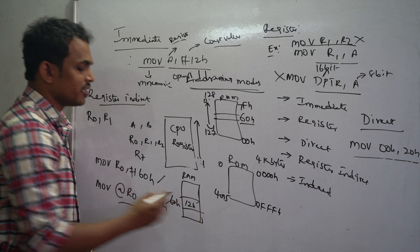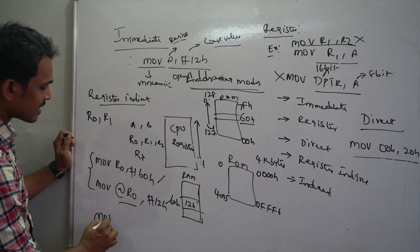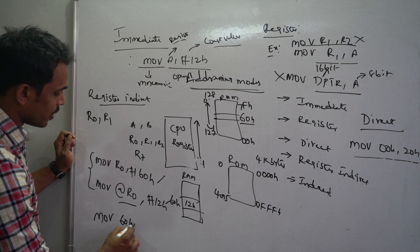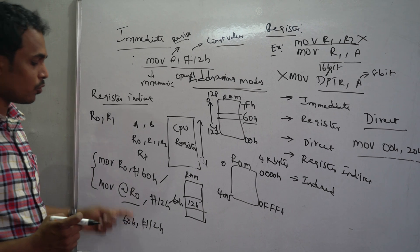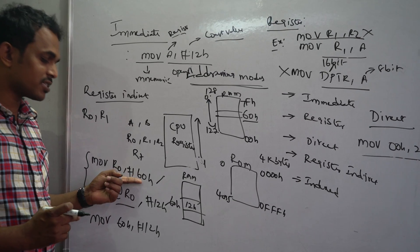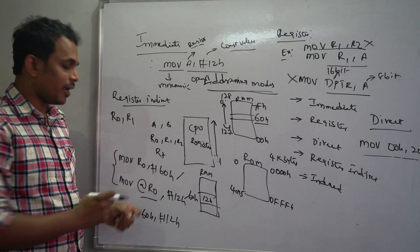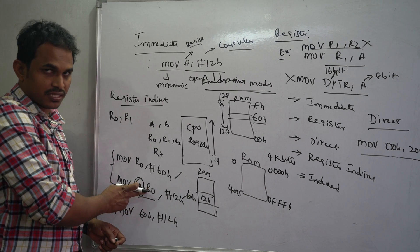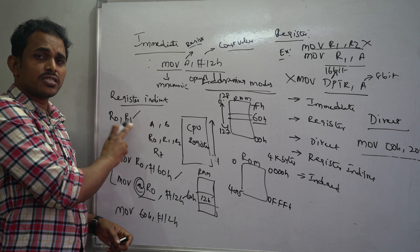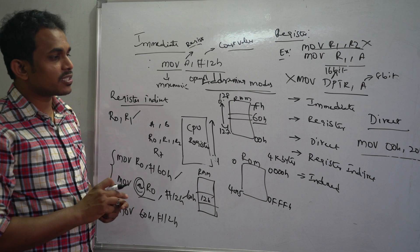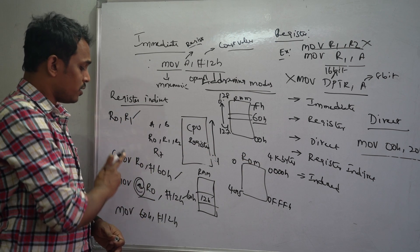You could also write MOV 60H, #12H as a direct addressing mode equivalent, but in register indirect addressing mode you do not use the direct address — instead, the @ symbol before R0 converts the value into an address. R0 and R1 are the two pointer registers available for accessing RAM memory locations.